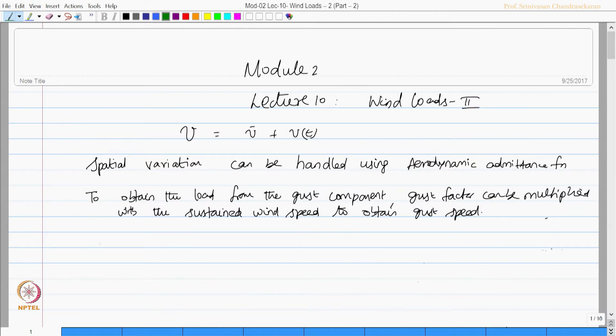Average gust factor advised by the literature is in the range 1.35 to 1.45. Further, variation of gust along the height is negligible.